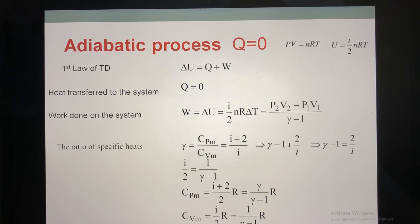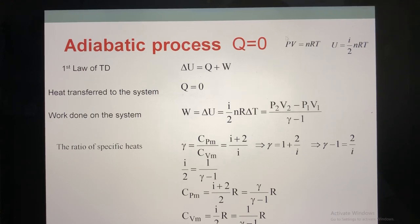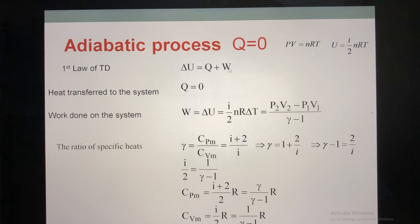In this process, the equation is almost different from the previous processes — for example, isobaric, isovolumetric, or isothermal. We base on the first law equation to write the equation for each process, but for the adiabatic process, we cannot base on that information alone. Now, we focus on three quantities: the change of internal energy, the heat, and the work.